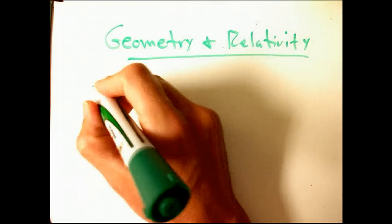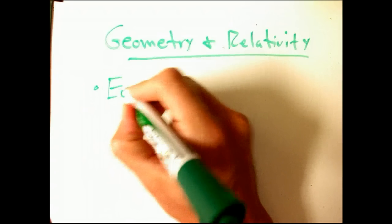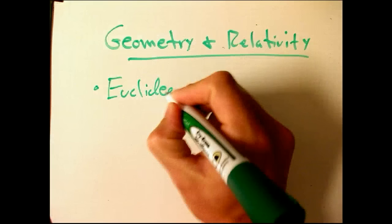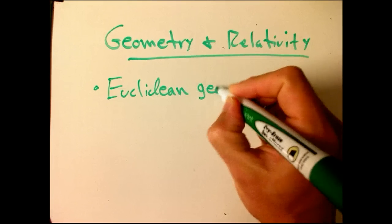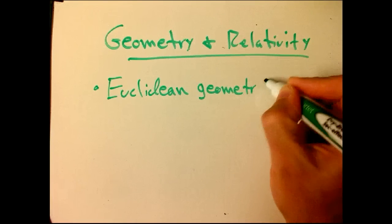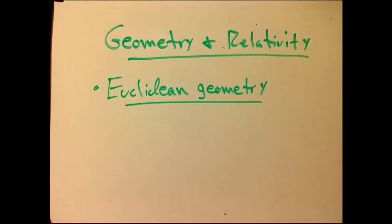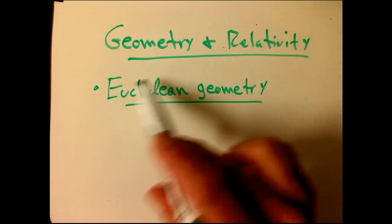So what we're going to start with is we're actually going to start with Euclidean geometry. The main theme of this whole series is going to be that you can understand relativity by comparing it to Newtonian mechanics, but a lot of times it's actually more useful to un-confuse yourself by comparing it to Euclidean geometry.